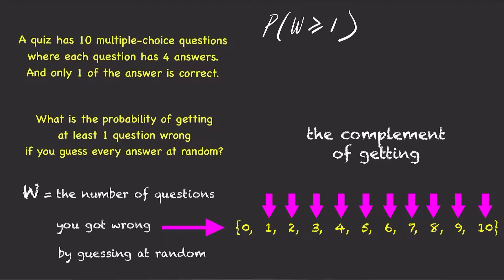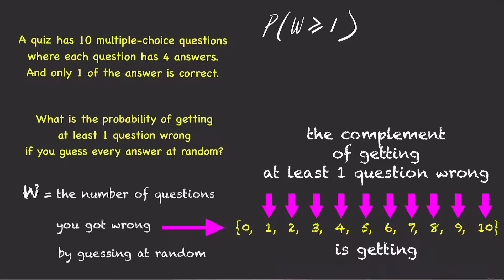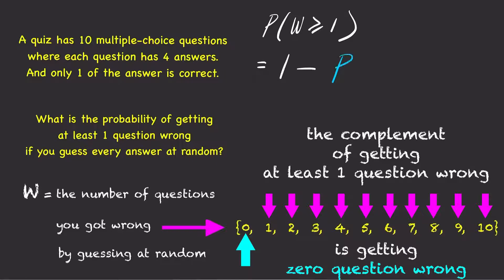The complement of getting at least one question wrong is getting less than one question wrong, which is getting zero questions wrong. So, p of w greater than or equal to 1 is 1 minus p of w equals 0.